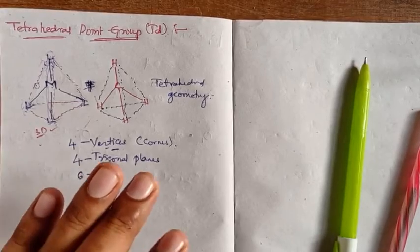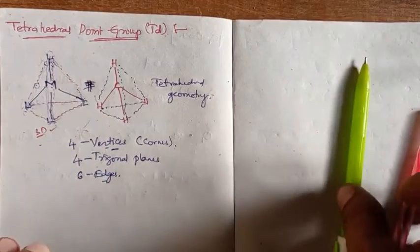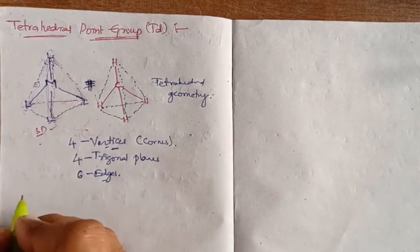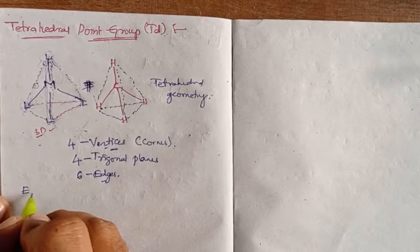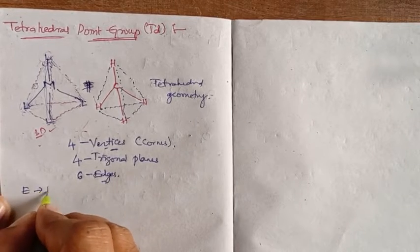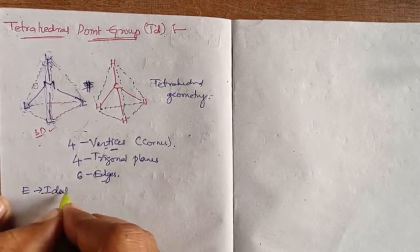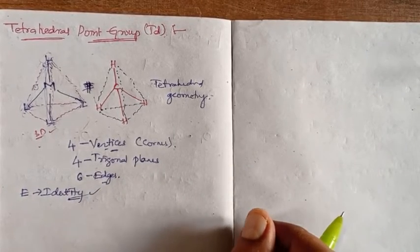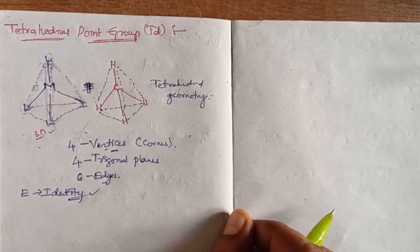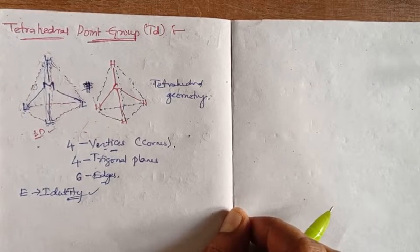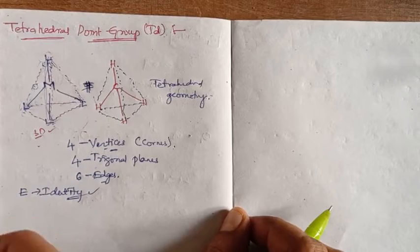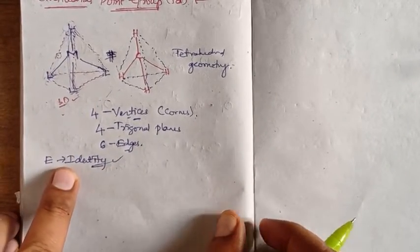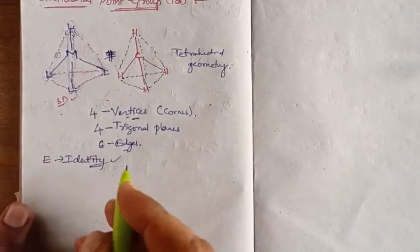When we look into the symmetry elements of this tetrahedral geometry, it surely will have the identity element. The identity element is present in every molecule, regardless of geometry or structure. So tetrahedral also will consist of the identity element.